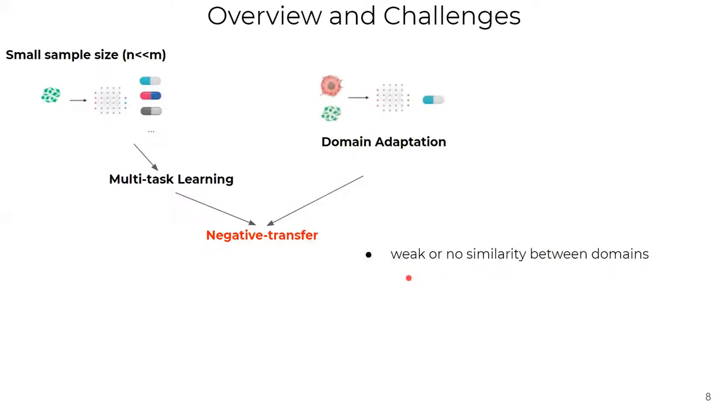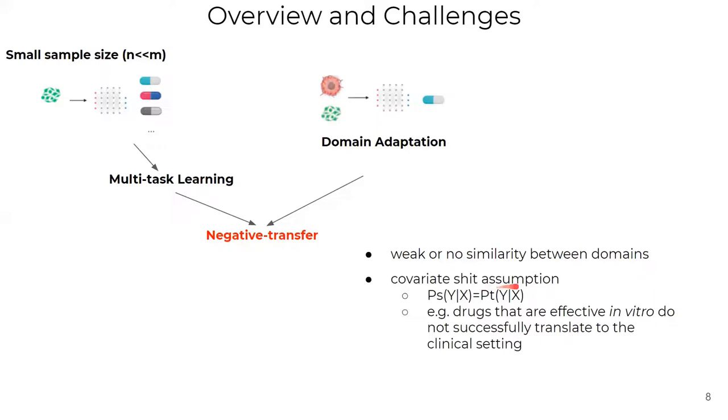Or when the adaptation relies on covariate shift assumption. Meaning that the marginal distribution is allowed to differ, while the conditional distribution is assumed to be the same. This assumption might be strict for transfer drug response from cell lines to patients. For example, there are drugs that are effective in vitro but do not successfully translate to the clinical setting. So, TUGDA alleviates covariate shift assumption for domain adaptation.